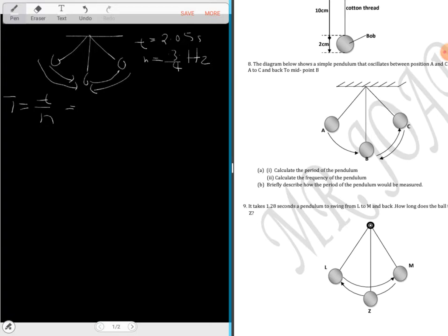So we have time is 2.05 divided by 0.75. That will give you a period of 2.7 seconds. Calculate the frequency of the pendulum. Frequency is equal to one over period. Frequency is the reciprocal of period, and in this case one over the period is 2.7.